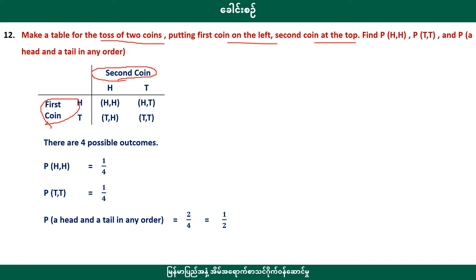There are four possible outcomes: HH, HT, TH, and TT. The probability of HH is one quarter. The probability of TT is one quarter. The probability of a head and a tail in any order is one half.